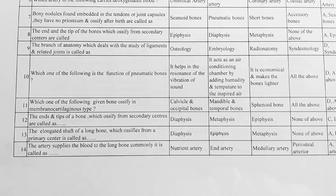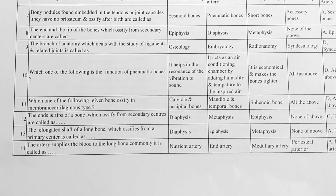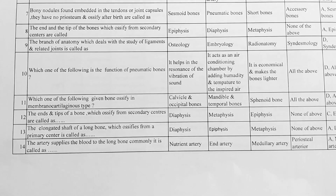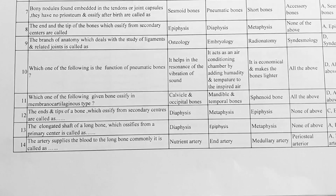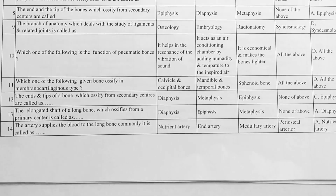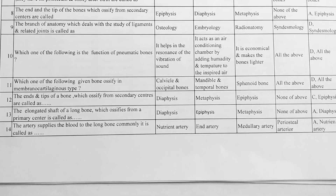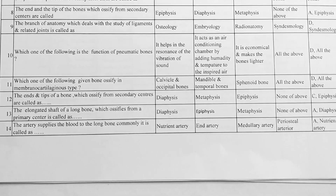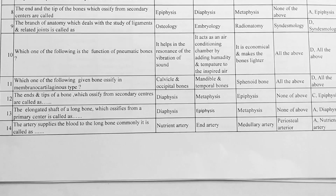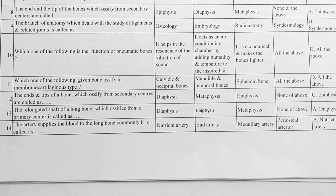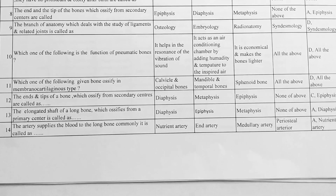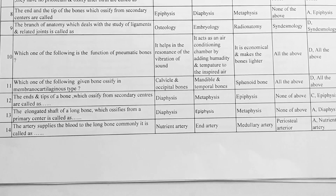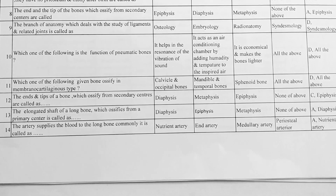Next, which one of the following bones ossify in membrane cartilaginous type? Options: A. clavicle and occipital bones, B. mandible and temporal bones, C. sphenoid bone, D. all of the above. Correct answer is D, all of the above.